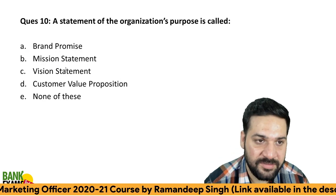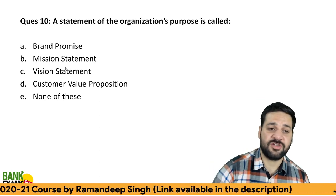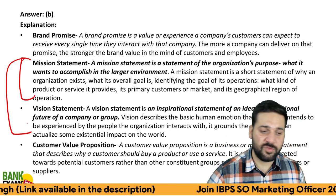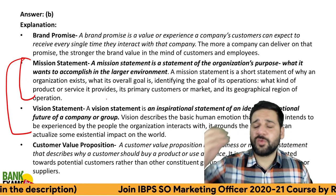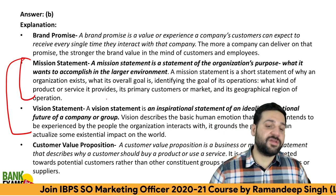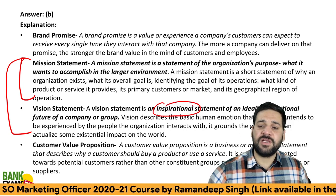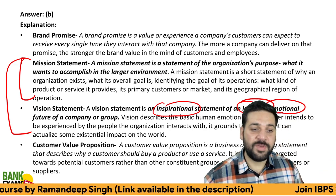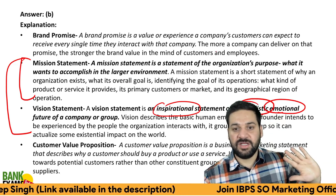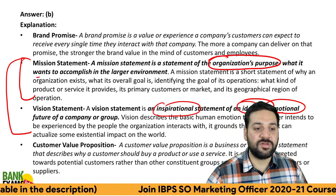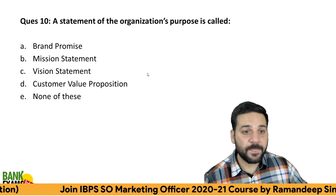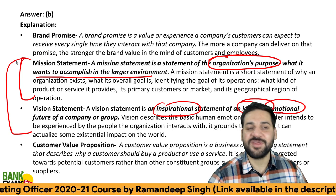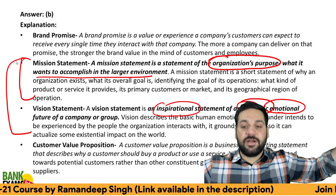A statement of an organization's purpose is called what — brand promise, mission statement, vision statement, or customer value proposition? Students often confuse mission and vision. A vision statement is inspirational, idealistic, and emotional — it is not specific. A mission statement is more specific; it states a company's purpose and what it wants to accomplish in its larger environment. So an organization's purpose is stated in the mission statement.